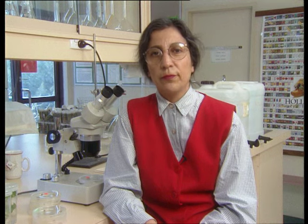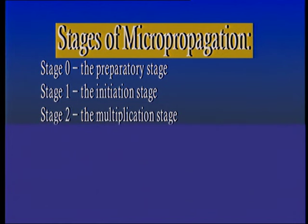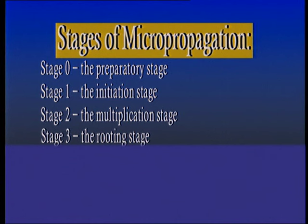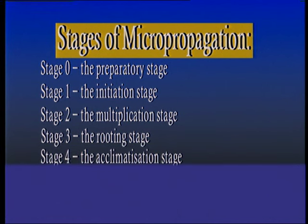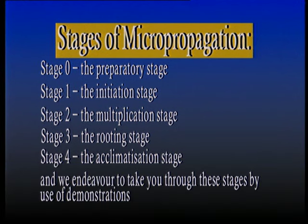The stages of micropropagation are: Stage 0, the preparatory stage; Stage 1, the initiation stage; Stage 2, the multiplication stage; Stage 3, the rooting stage; and finally Stage 4, the acclimatization stage. We endeavor to take you through these stages by use of demonstration.